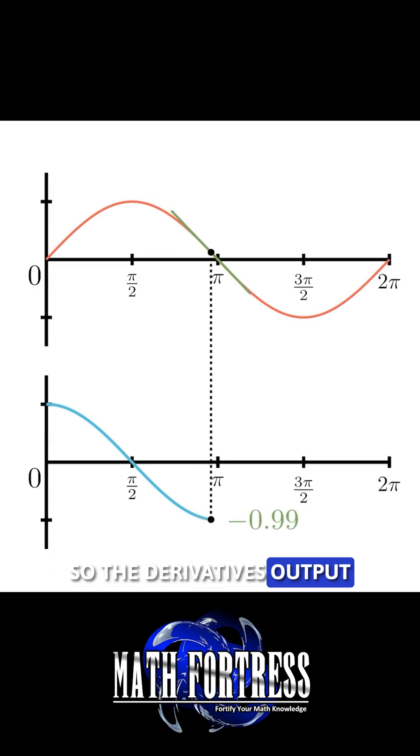So, the derivative's output will be equal to negative 1 at x equals pi. Alright.